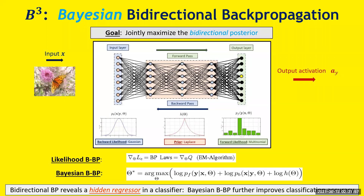Ordinary backpropagation, which goes back decades, takes an input signal, passes it from left to right, and trains in the forward direction. Bidirectional backpropagation, which we introduced in 2016, trains it forward and backwards. And now Bayesian bidirectional backpropagation also trains the prior, or set of priors, on the parameters of the network.